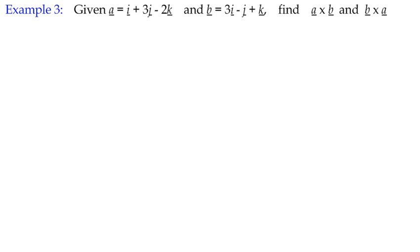In example three we've got two vectors here. a is i plus 3j minus 2k, or 1, 3, negative 2, and b is 3i minus j plus k. We're asked to do two things: find the cross product a cross b and then b cross a the other way around. Let's have a look at calculating a cross b.